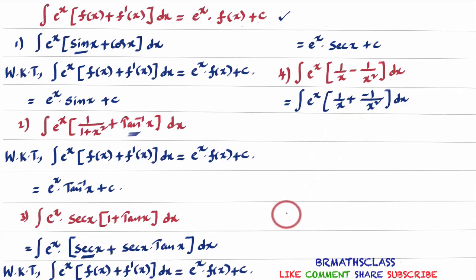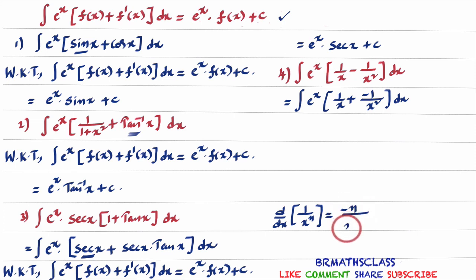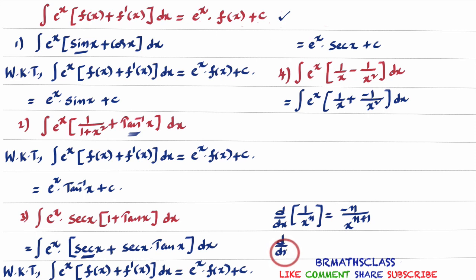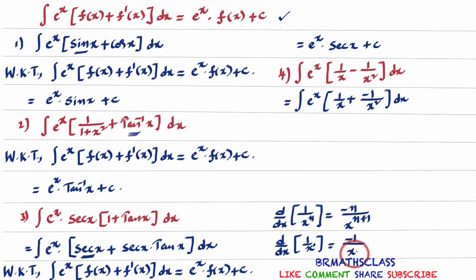We know the formula in differentiation: d/dx of 1/xⁿ equals minus n divided by x^(n+1). Here, for the derivative of 1/x, n equals 1. Substituting: we get minus 1 divided by x^(1+1), which is x². So the derivative of 1/x is minus 1/x².